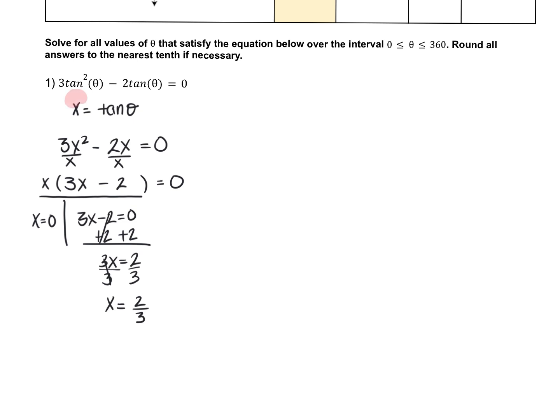A quick solve will get me to 3x equals 2 divided by 3. Now that these are my x values, I have to put what I let x equal back in. So x is equal to tan of theta. Here we have tangent of theta equals 0, and here we have tangent of theta equals 2 thirds.